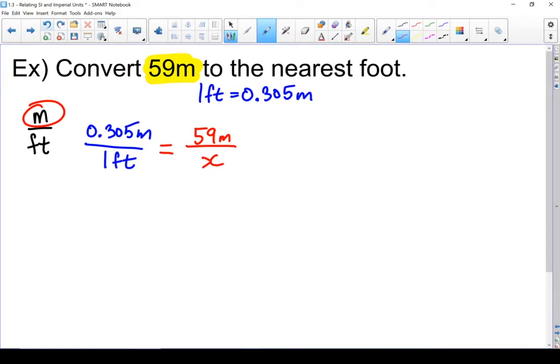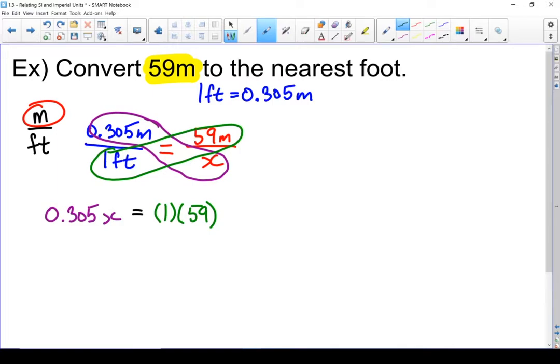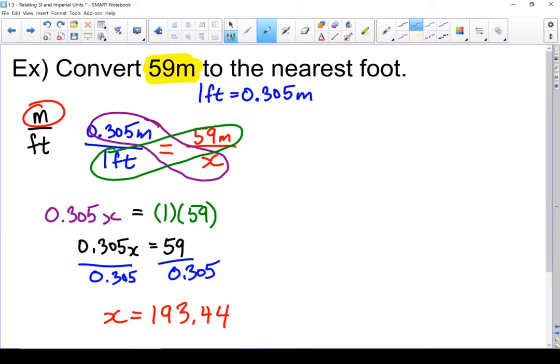Now let's do our cross multiplication. Top from the one bottom from the other. I always like starting with the pair that has my x. So let's multiply those two together. And the other side of the cross multiply I'm going to multiply these two together. I've got 1 times 59. 1 times anything doesn't change it. I've got 0.305x equals 59. I'm going to get x all by itself so I'm going to divide both sides by 0.305. And I'm left with an end answer of x equals 193.44.